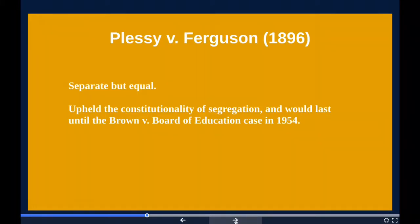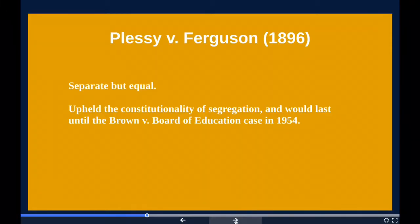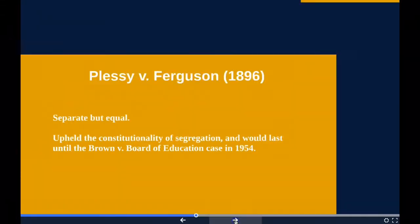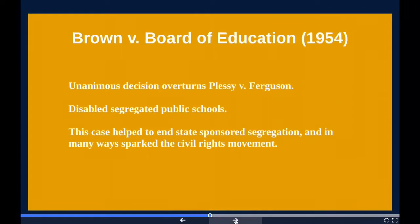So what you're essentially seeing here is that the Plessy v. Ferguson case in 1896 upheld the constitutionality of segregation under the terms 'separate but equal' when referring to African Americans and whites. This changes with Brown v. Board of Education in 1954.